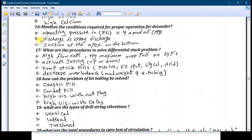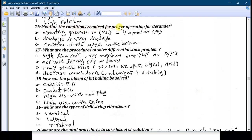Number sixteen: mentioned the conditions required for proper operation of the desander. Number A: operating pressure or the MPSI is 4 multiplied by the mud weight in PPG. Number B: the discharge must be spray discharge not rope. It must be spray discharge not rope one. Number C: the suction at the apex on the bottom. You must have some suction. If you put your hand it will be sucked.